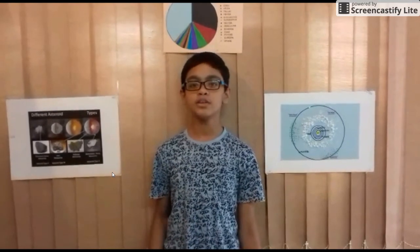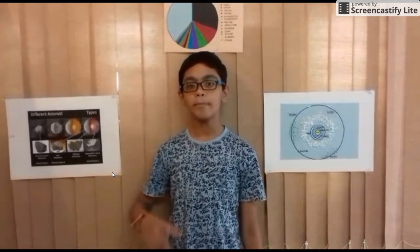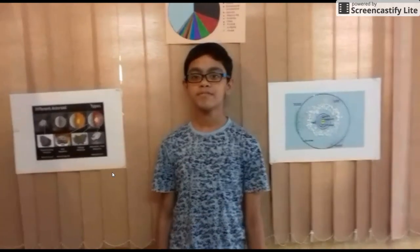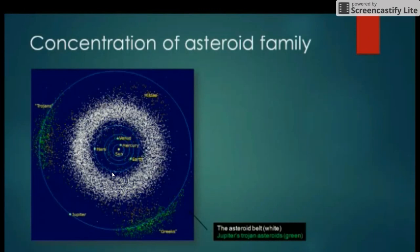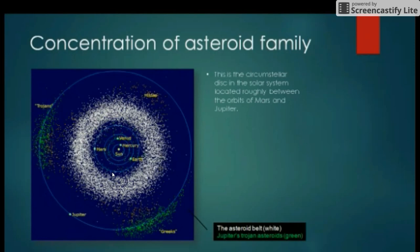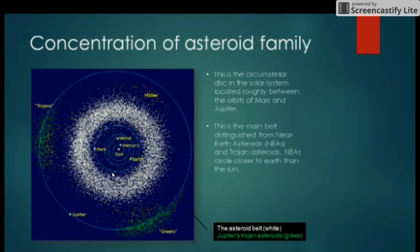Some of them have been pulled into the orbits of planets. This graph displays the concentration of an asteroid family. This is the circumstellar disk in the solar system, located roughly between the orbits of Mars and Jupiter. This is the main belt, distinguished from Near Earth Asteroids, NEAs, and Trojan Asteroids.